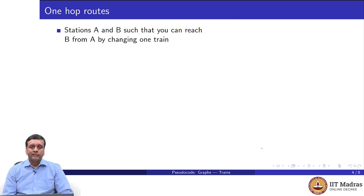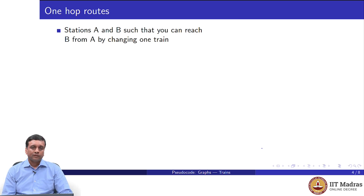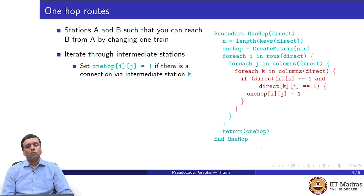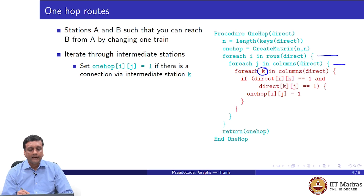Given that we know how to go directly from one station to another by train, the next logical question is: where all can we go if we are allowed to change trains once? We call this a one-hop route. We are allowed to go from A to B by first going to an intermediate station C, getting off at C, changing trains, and going from C to B. Changing trains means the station where we get off must be the terminus of the first train — the last station of the train from A to C — and then the first station of the train from C to B. To find all one-hop routes, we iterate through all intermediate stations, taking every station I and every station J, and looking for every intermediate station K whether it is possible to go from I to K and then from K to J by a direct train. If this is the case, we set one_hop[i][j] to be 1.